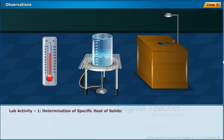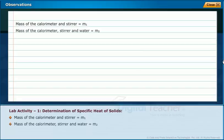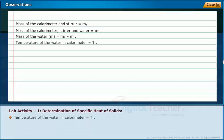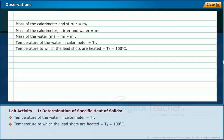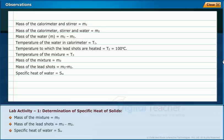Observations: Mass of calorimeter and stirrer = M1. Mass of calorimeter, stirrer and water = M2. Mass of water = M2 - M1. Temperature of water in calorimeter = T1. Temperature to which lead shots are heated = T2 = 100°C. Temperature of the mixture = T3. Mass of the mixture = M3. Mass of lead shots = M3 - M2. Specific heat of water = Sw. Specific heat of calorimeter = Sc.